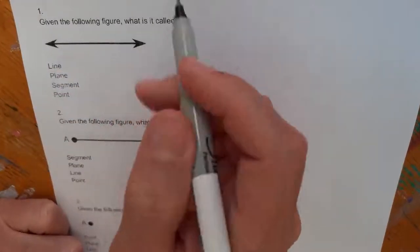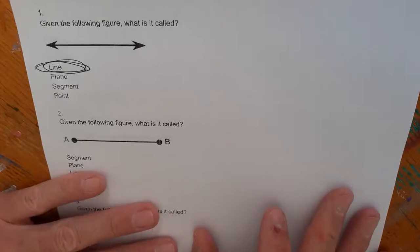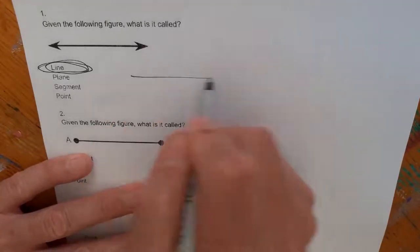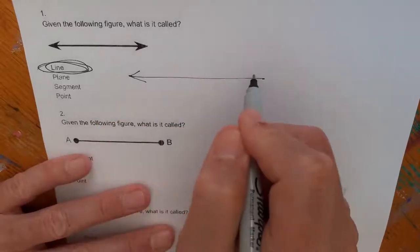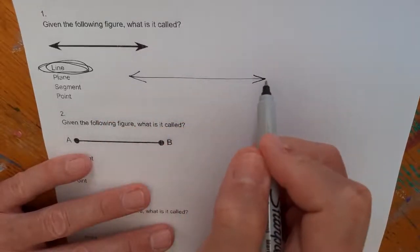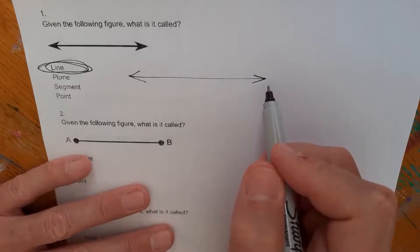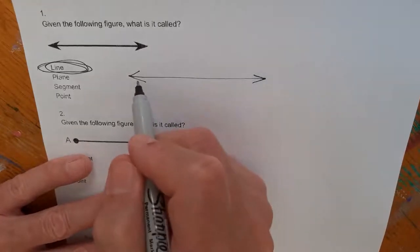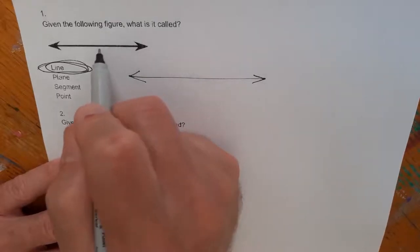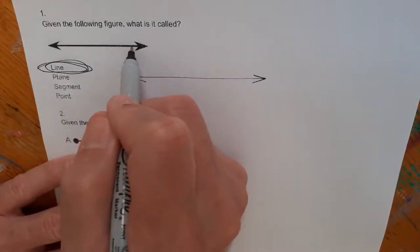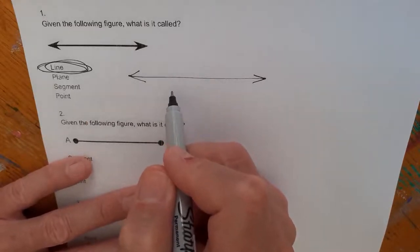Given the following figure, what is it called? It's a line. A line is this kind of drawing with arrowheads on both sides. Why? Because a line, by definition, extends in both directions forever. It goes out to infinity. A line has some unique characteristics. It's infinitely thin, perfectly straight, and it goes in both directions forever.